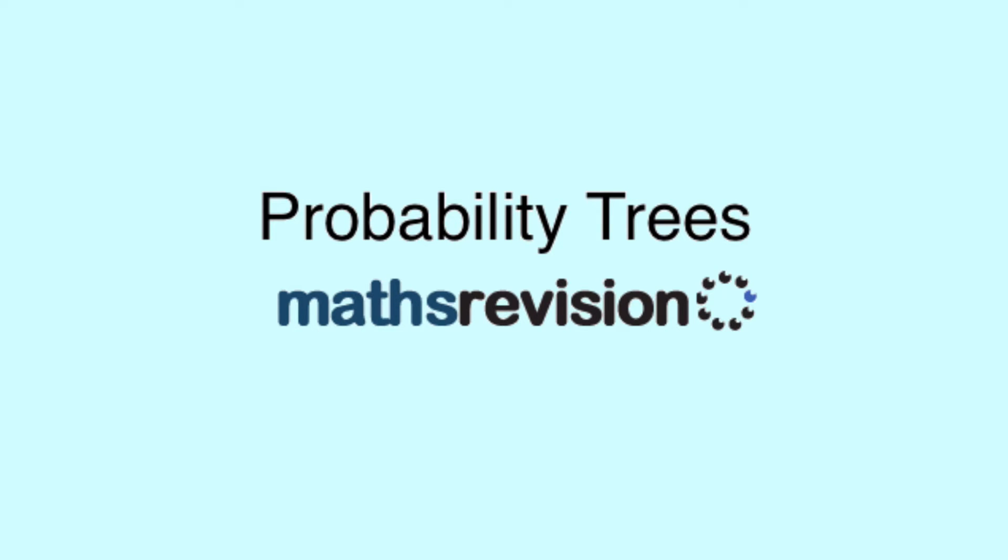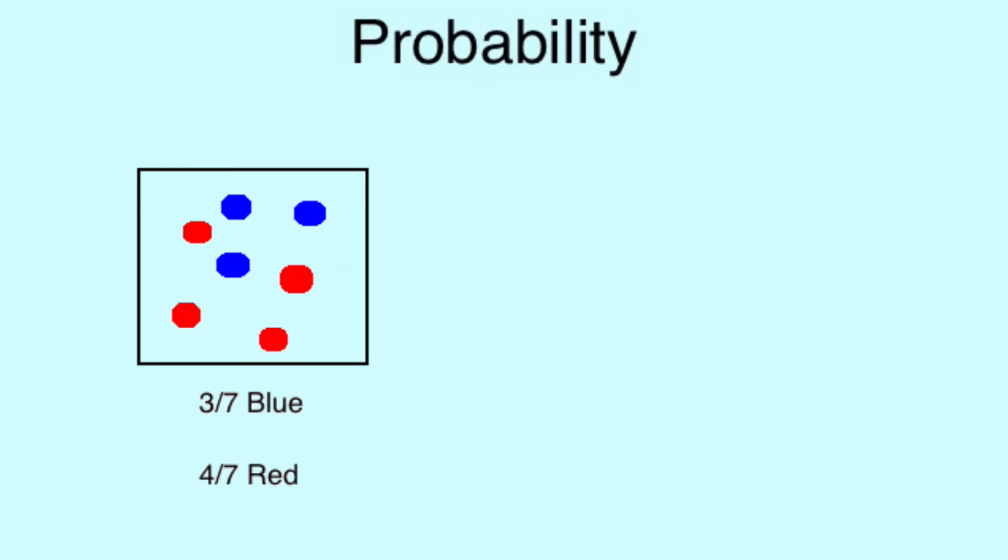Hi and welcome to another video from MathsRevision.net, Probability Trees. Probability Trees allow us to work out the odds of conditional events. A conditional event is one where the result from a previous event has an effect on the possible outcomes of the following event.